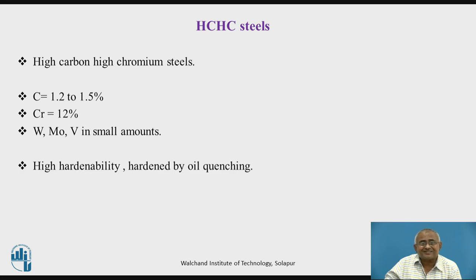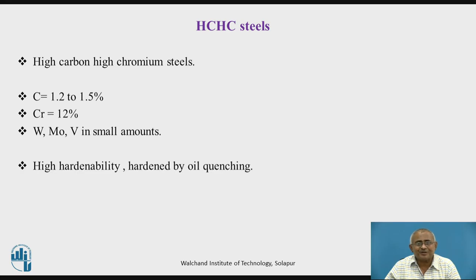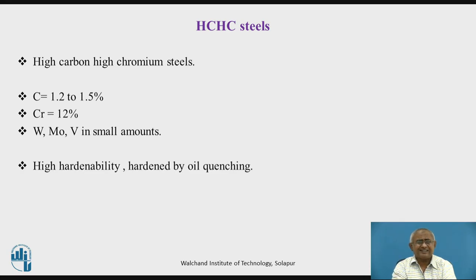Then comes the next steel, which is widely used in industry to manufacture dies and tools used in the press shop — HCSC steel. H stands for high, C stands for carbon, the second H stands again for high, and the second C stands for chromium, meaning this steel contains high carbon as well as high chromium. It contains 1.2 to 1.5 percent carbon and around 12 to 13 percent chromium, along with little amounts of tungsten, molybdenum, and vanadium as needed.